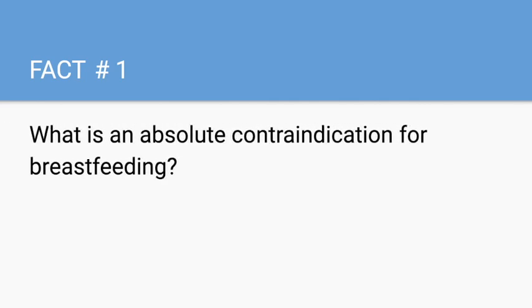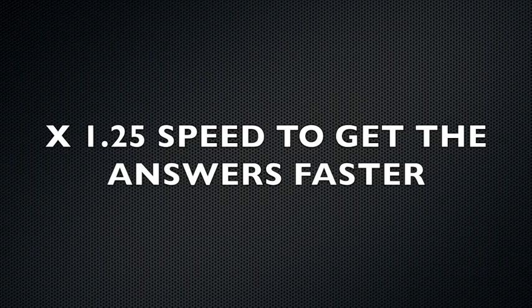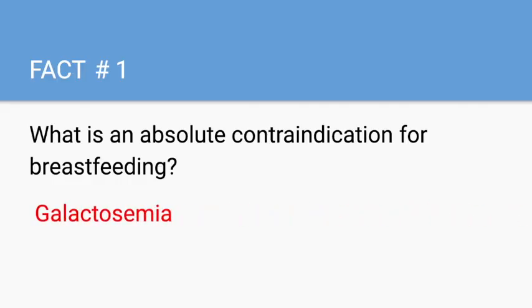What is an absolute contraindication for breastfeeding? Galactosemia. Galactosemia is due to a galactose-1-phosphate uridyl transferase deficiency — it is a severe autosomal recessive condition that occurs due to the body's inability to metabolize galactose, which is a simple sugar found in dairy products.